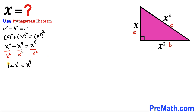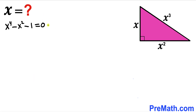Moving all terms to the right-hand side, our equation becomes x to the power 4 minus x squared minus 1 equals 0. We have ended up with the quartic equation x⁴ minus x² minus 1 equals 0.